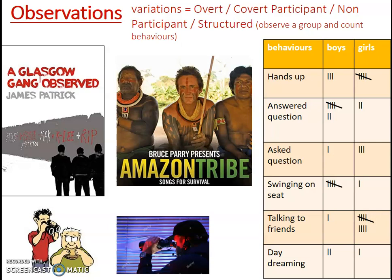You've also got covert participant and covert non-participant. A famous example is 'A Glasgow Gang Observed' by James Patrick — that's actually a changed name, not his real name. He went undercover, dressed in a particular way, and gained access to a criminal gang in Glasgow through a gatekeeper, someone he sort of knew who brought him along to the group. He spent time with this criminal gang trying to gain insight into their operations and why they were members. It was a very dangerous study — he ended up having to leave the group quickly, move away, and change his identity.